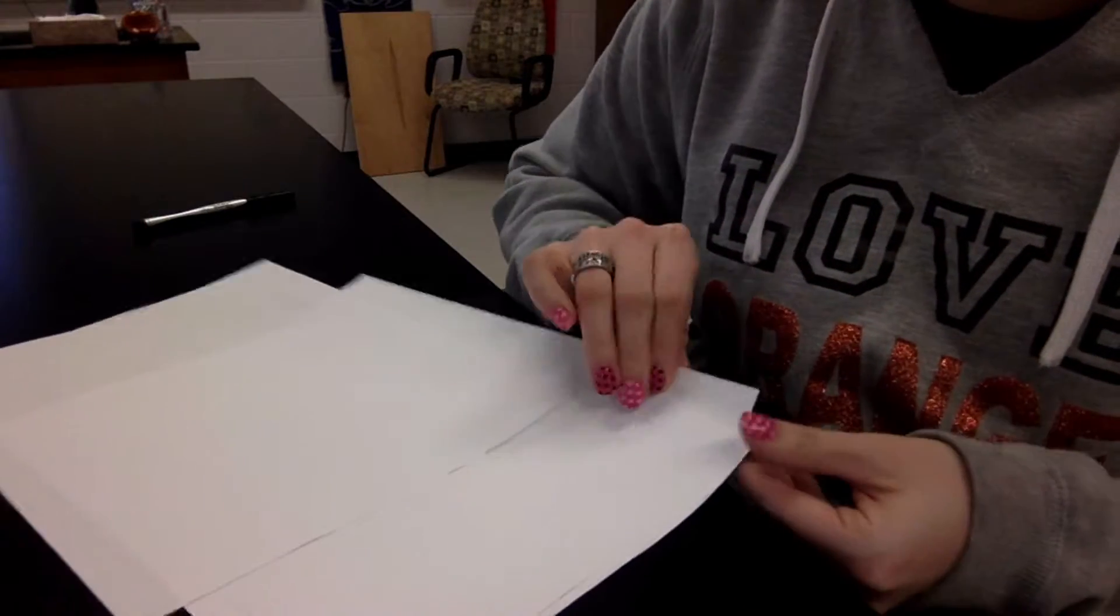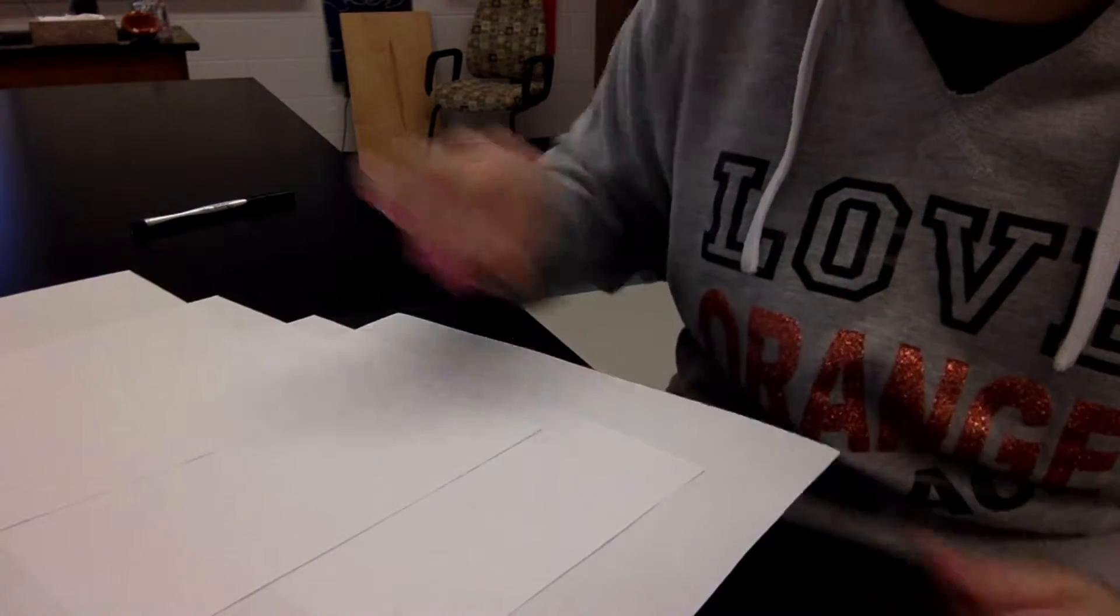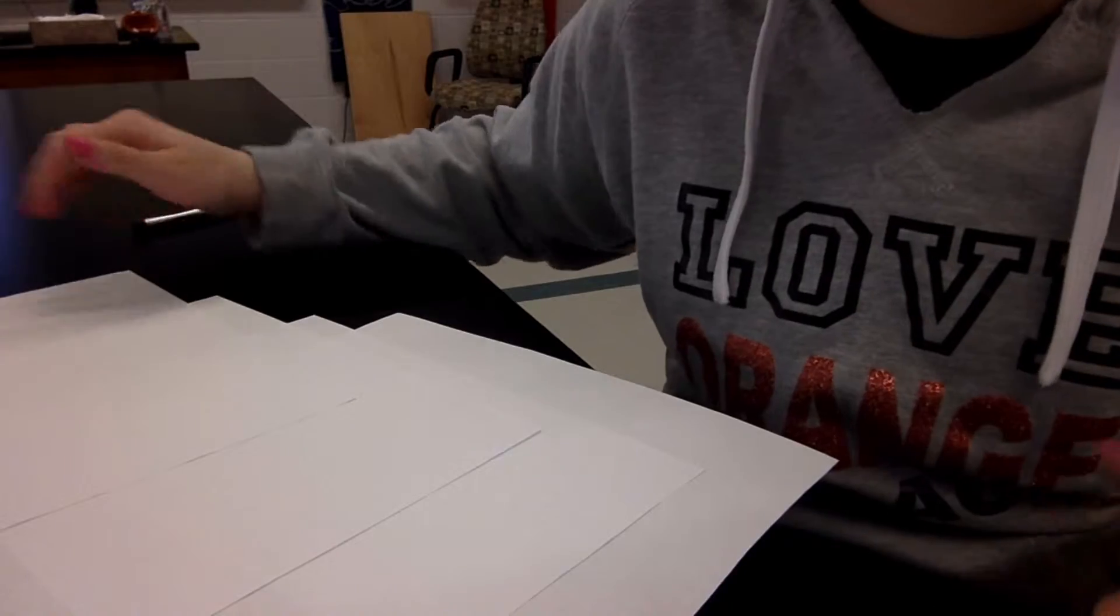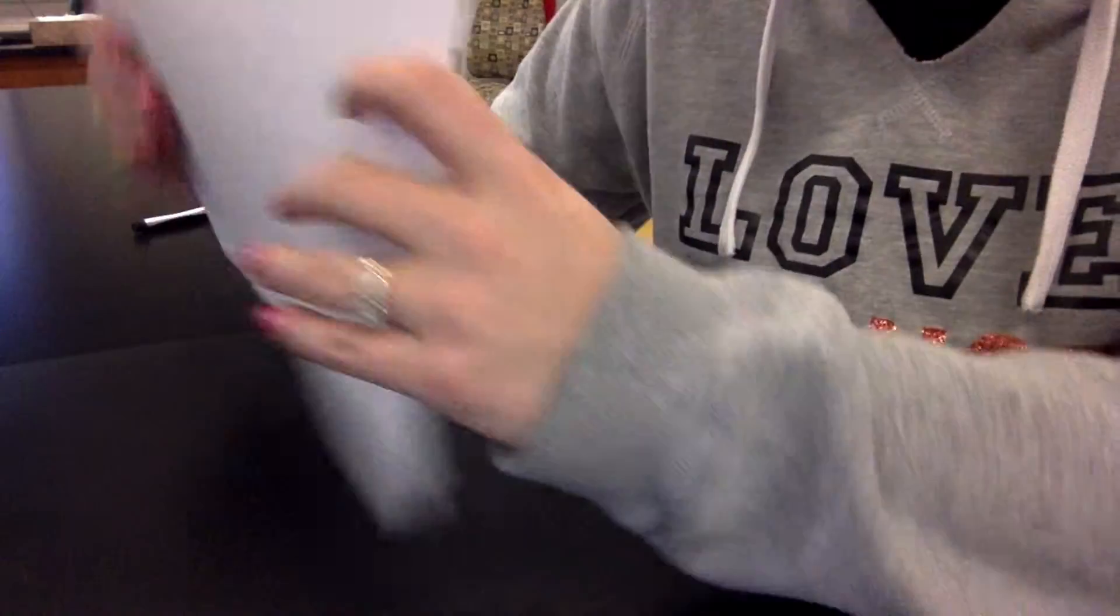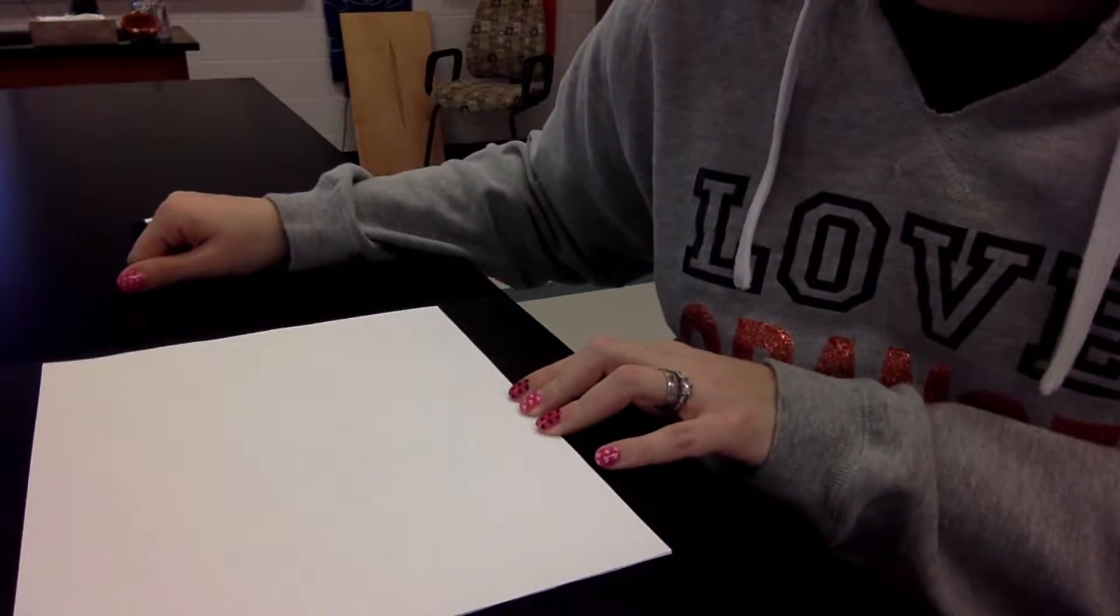So the first thing you need are four pieces of white paper. There are stacks of paper in the classroom. Go ahead and grab four pieces and I want you to stack them directly on top of each other.